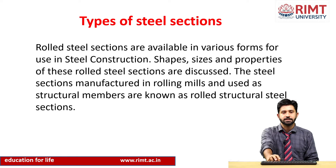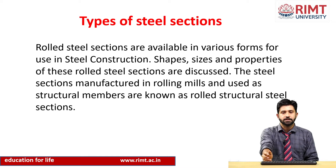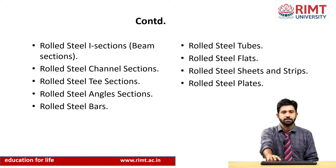Types of steel sections: in various civil engineering projects we use various types of steel sections, classified according to the shape of the sections. Steel sections are manufactured in rolling mills, which is why they are known as rolled steel sections. The first type is rolled steel I sections, also known as beam sections or girders.